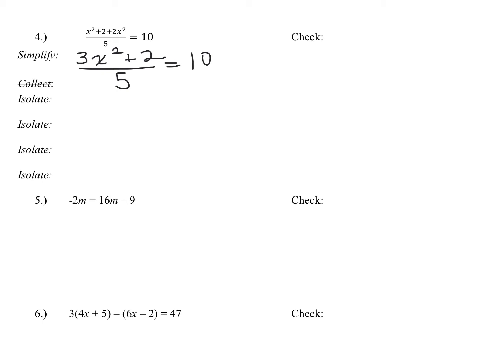So now I'm going to just start my isolating step. And so I'm going to isolate. In this case, when you have a division bar, you have to cancel out the division bar first. You don't move anything on top of the division bar. You have to multiply both sides by five to start. And so that's going to give you three x squared plus two equals 50.